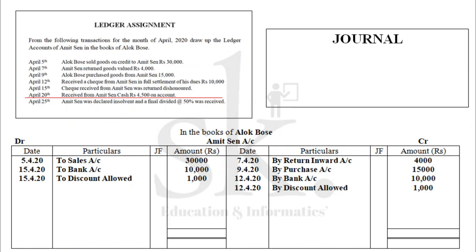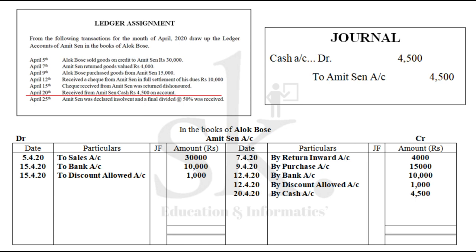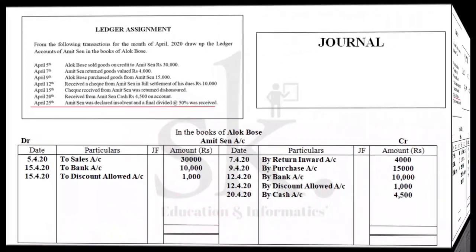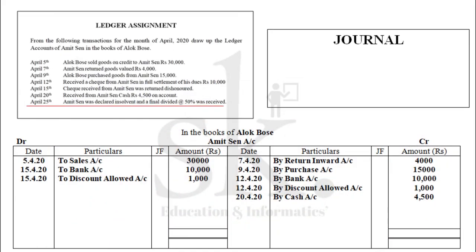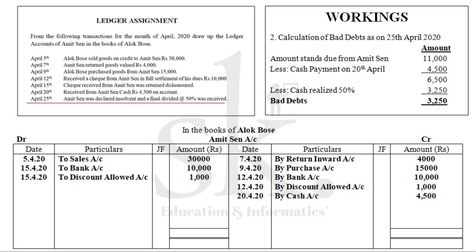On 20th April, received from Amit Sen cash Rs 4,500 on account. On 25th April, Amit Sen was declared insolvent and a final dividend of 50% was received. Alok Bose received only 50% of the amount due. We need to calculate the total amount due which Alok Bose should have received, and show the calculation in Working Number 2.